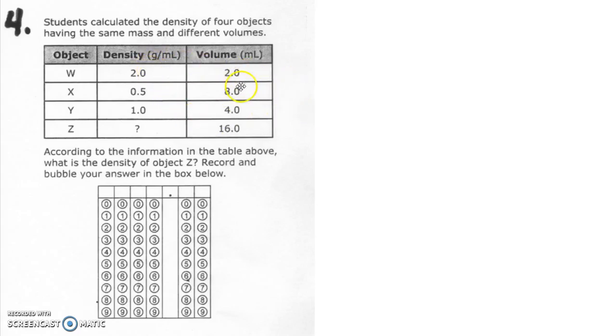The same mass divided by 8 equals 0.5. The same mass divided by 4 equals 1. So what is that mass that when you divide it by these volumes you get these numbers? I would start